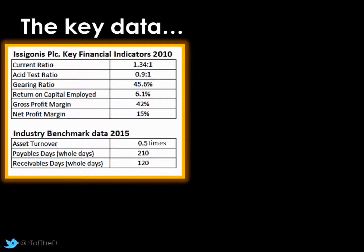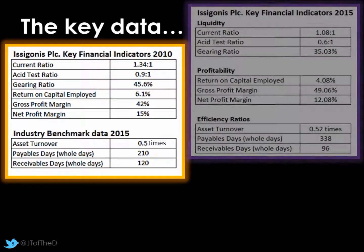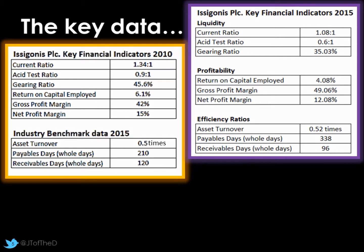We always need a comparison — without a point of comparison it's very hard to make judgements. Breaking the data down into three areas: liquidity, profitability, and efficiency ratios. From a liquidity point of view, our current ratio and acid test ratio are actually worse than they were in 2010. The current ratio has lost 0.3 and the acid test equally has lost about 0.3. The acid test has gone from 0.9:1 to 0.6:1 — this company is in a far less liquid position.